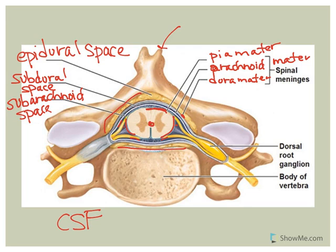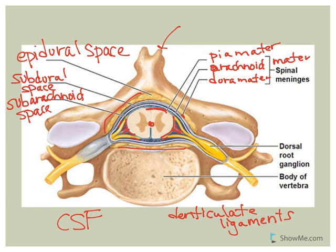The pia mater, the innermost layer, helps to form what we call denticulate ligaments, which you can see in the image. Denticulate ligaments extend from the pia mater out to the dura mater and help prevent lateral movement of the spinal cord. They are also a surgical landmark — surgeons know that denticulate ligaments are located between the ventral root and the dorsal root.